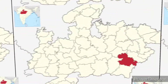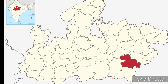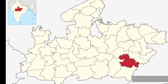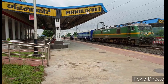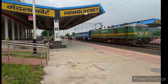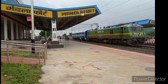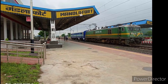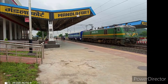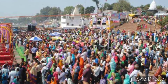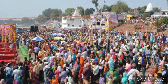The total number of villages are 1,214. The total area of the district is 8,771 km². The nearest railway station is Mandalapur, which is nearly 3 km away.